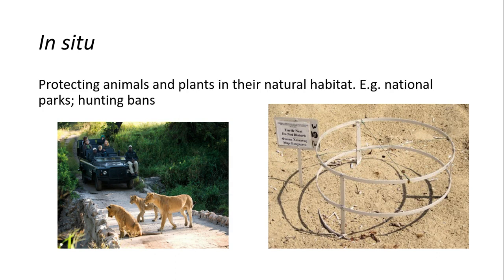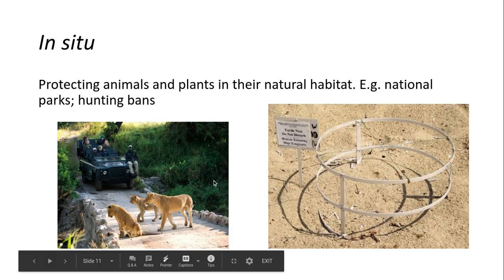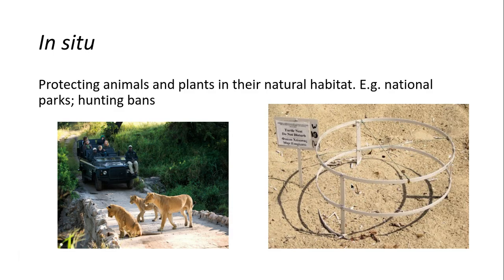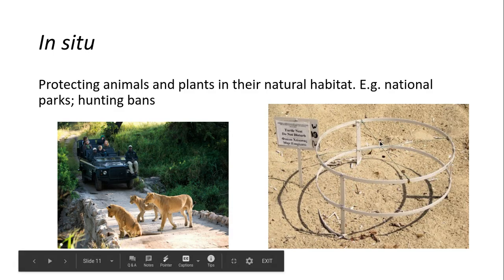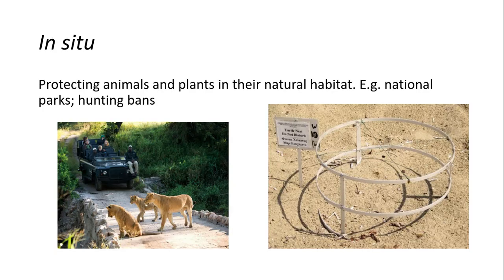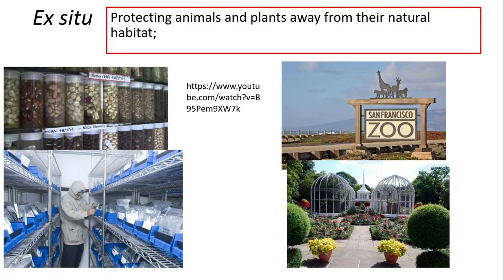In-situ conservation is where you protect animals and plants in their natural habitat. For example, national parks in Kenya — this is their natural habitat and you're protecting them there, such as lions. Another example is protecting turtle eggs in their natural habitat. You can do this through hunting bans, fines, and providing people to patrol the area to catch poachers.